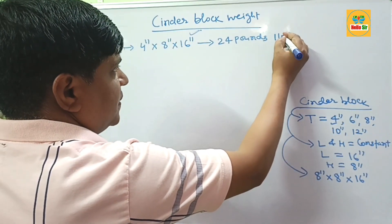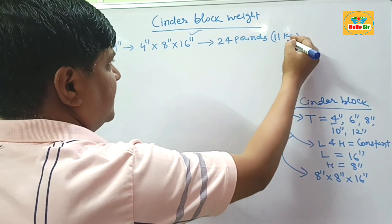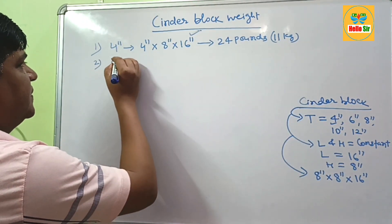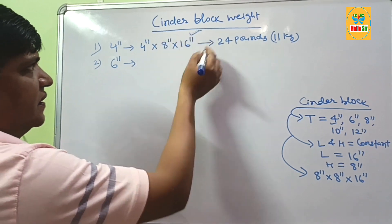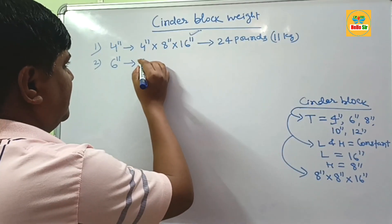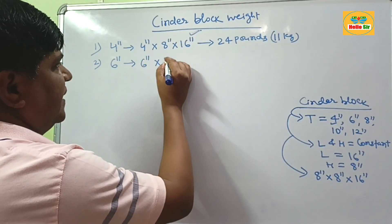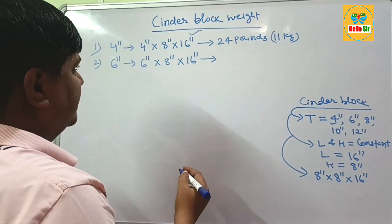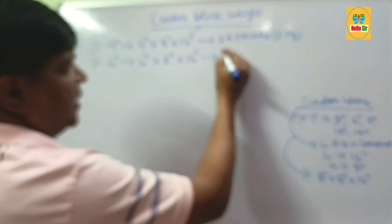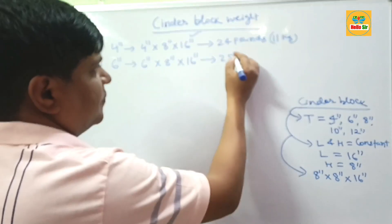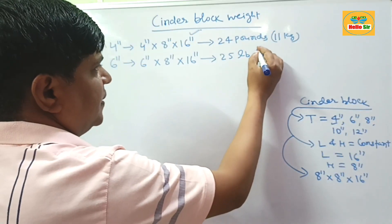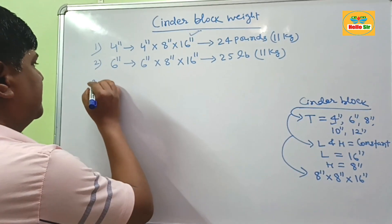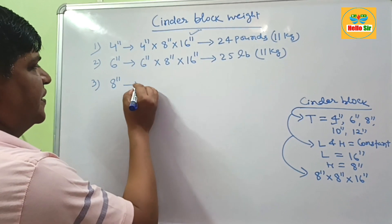The next block is the 6-inch thick cinder block. Its size is 6 inches thick, 8 inches in height, and 16 inches long. This block weighs about 25 pounds. If you convert this figure to kilograms, it is about 11 kg.